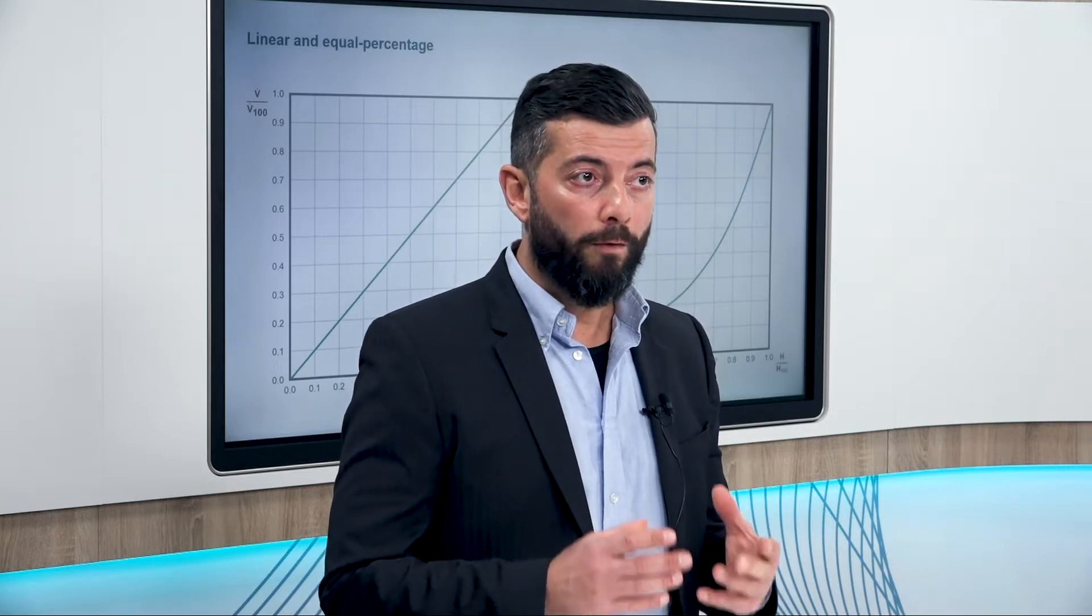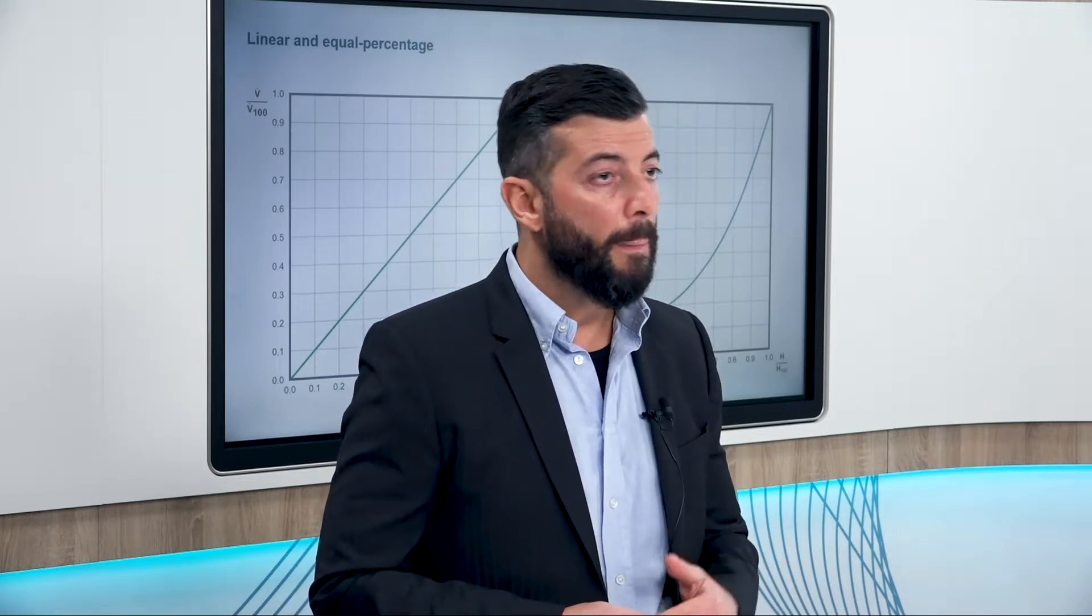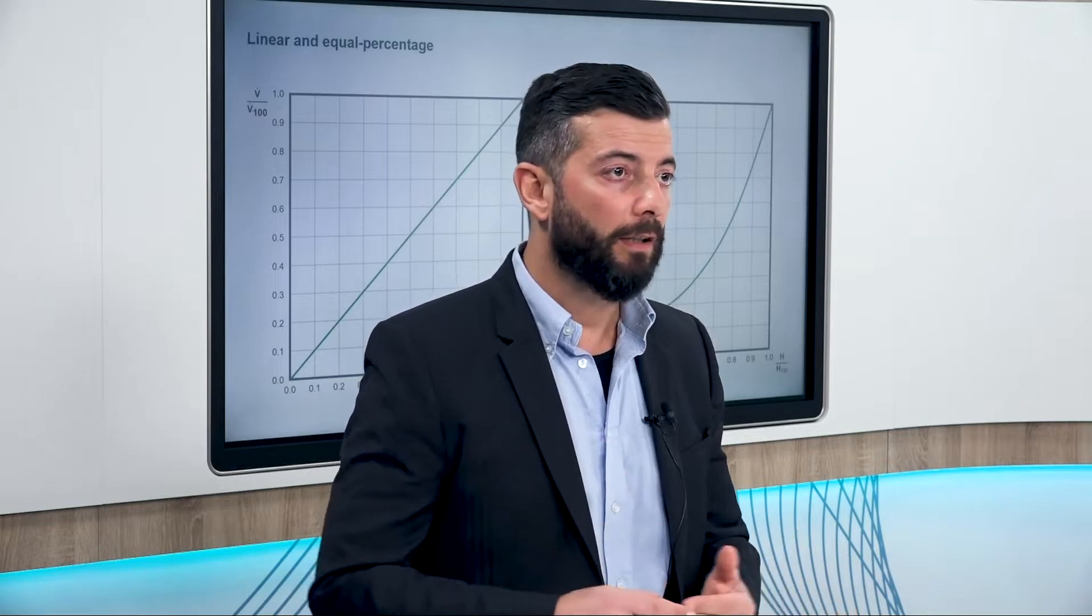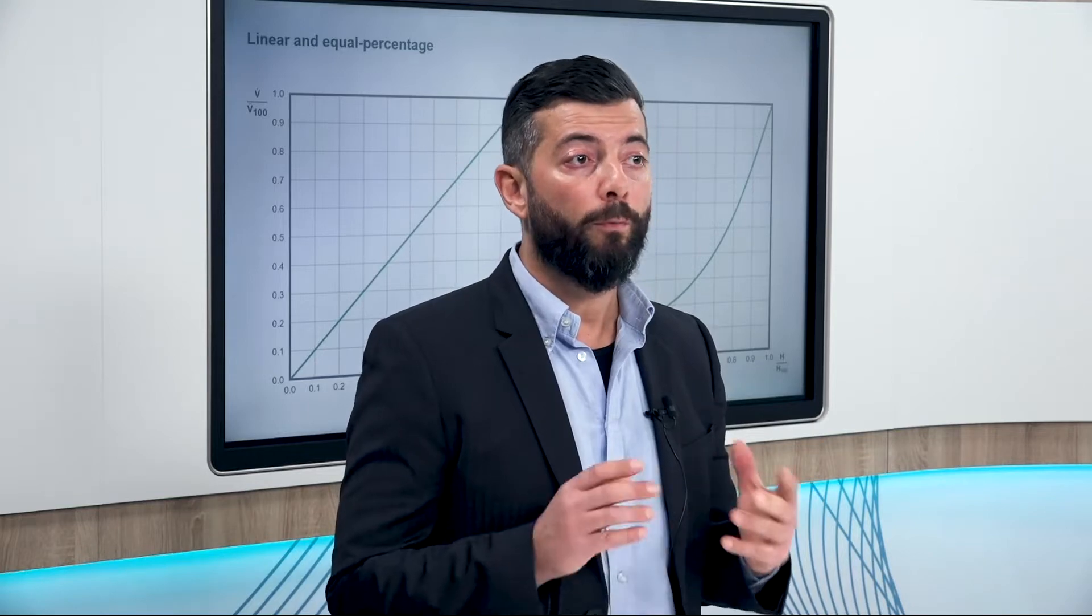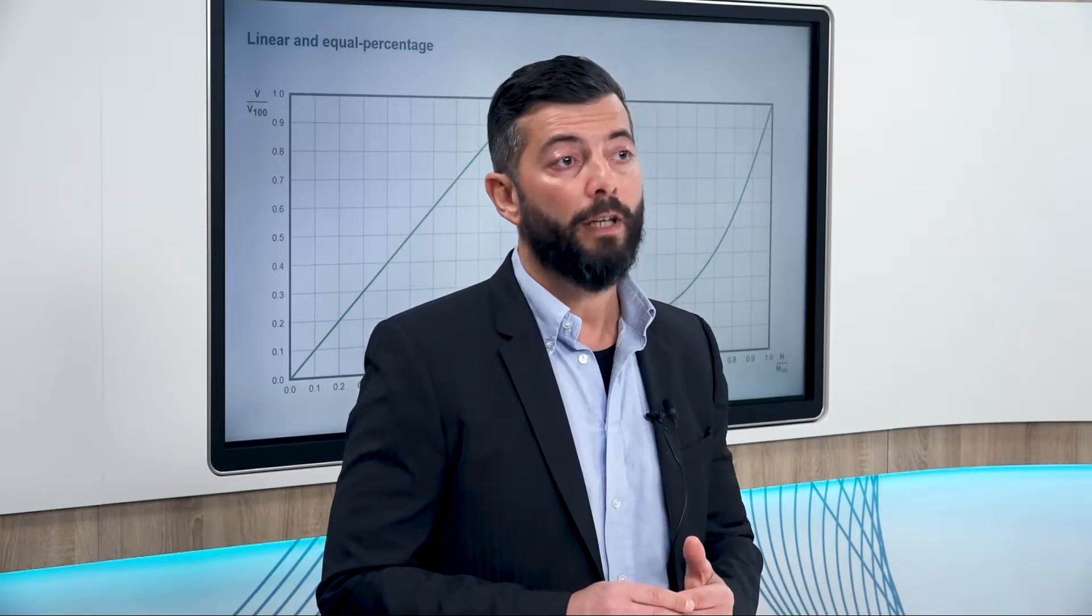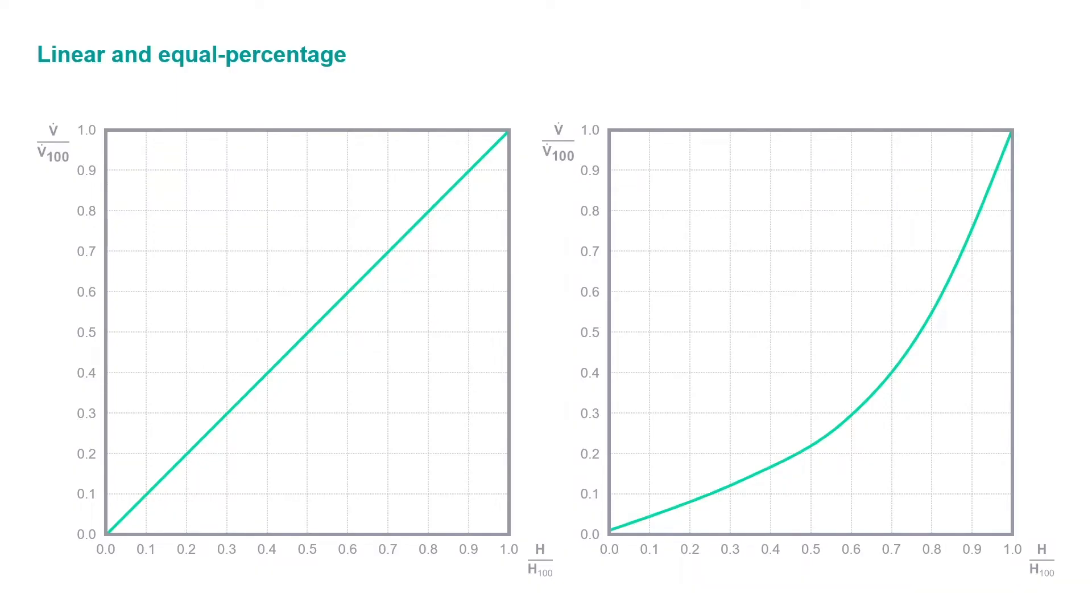And when we look at the typical characteristics of a control valve and actuator bundle, PSTV or even standard valves, then we can clearly distinguish two available types of modulating control characteristics in the market. Linear on the left-hand side, and the so-called equal percentage, which can be seen in the chart on the right-hand side.